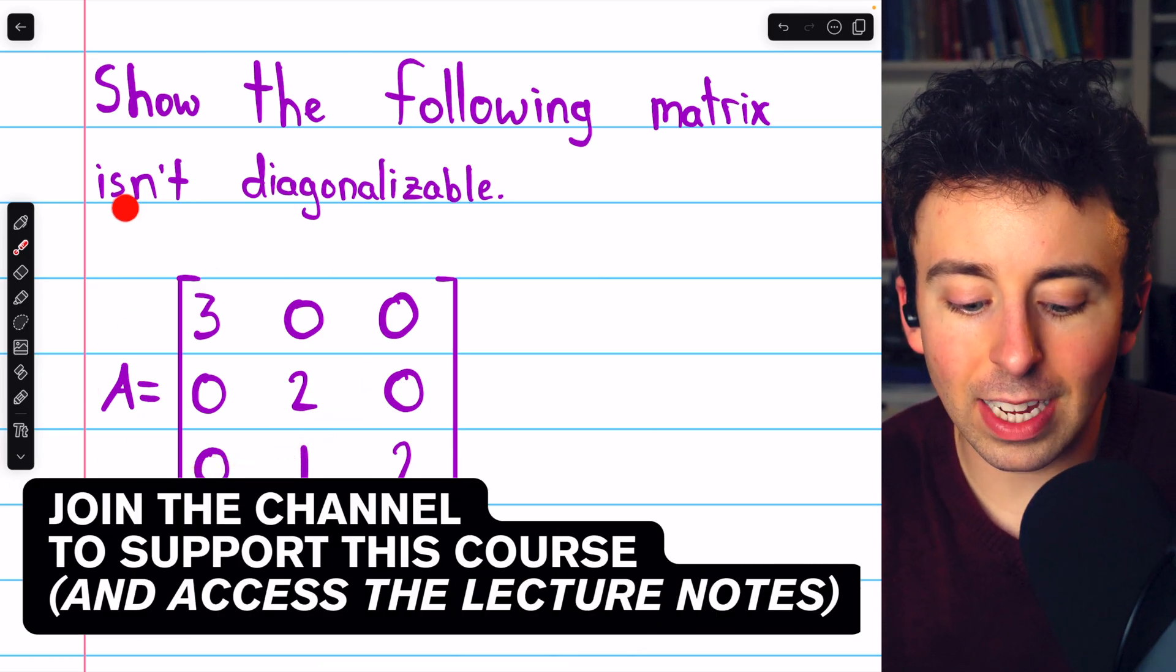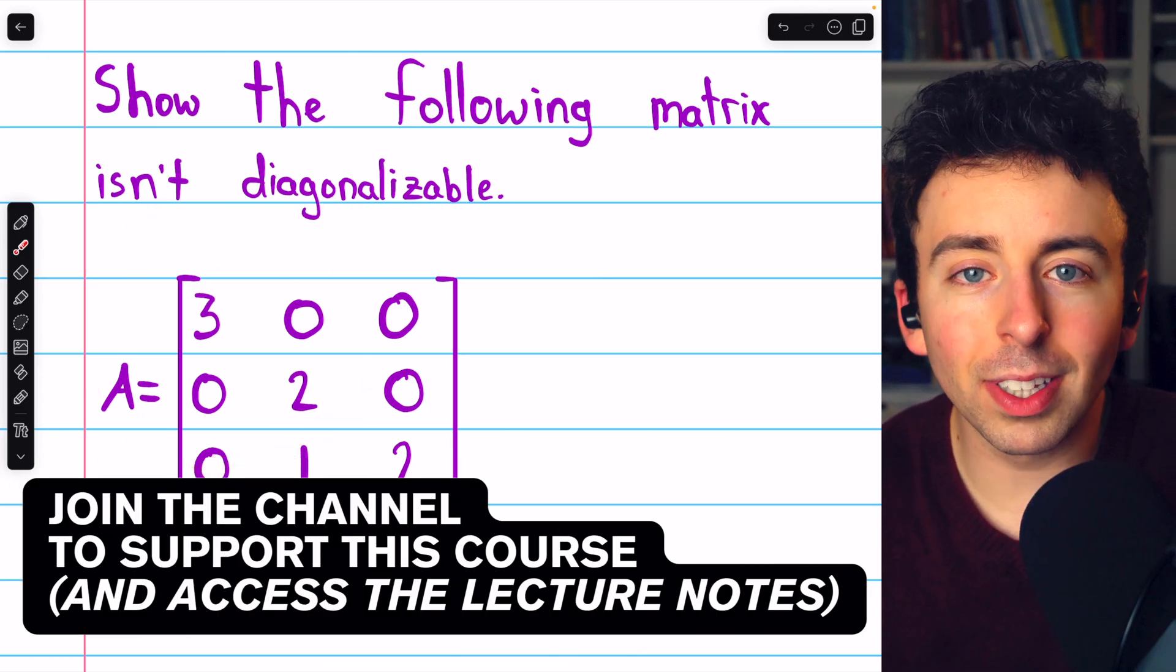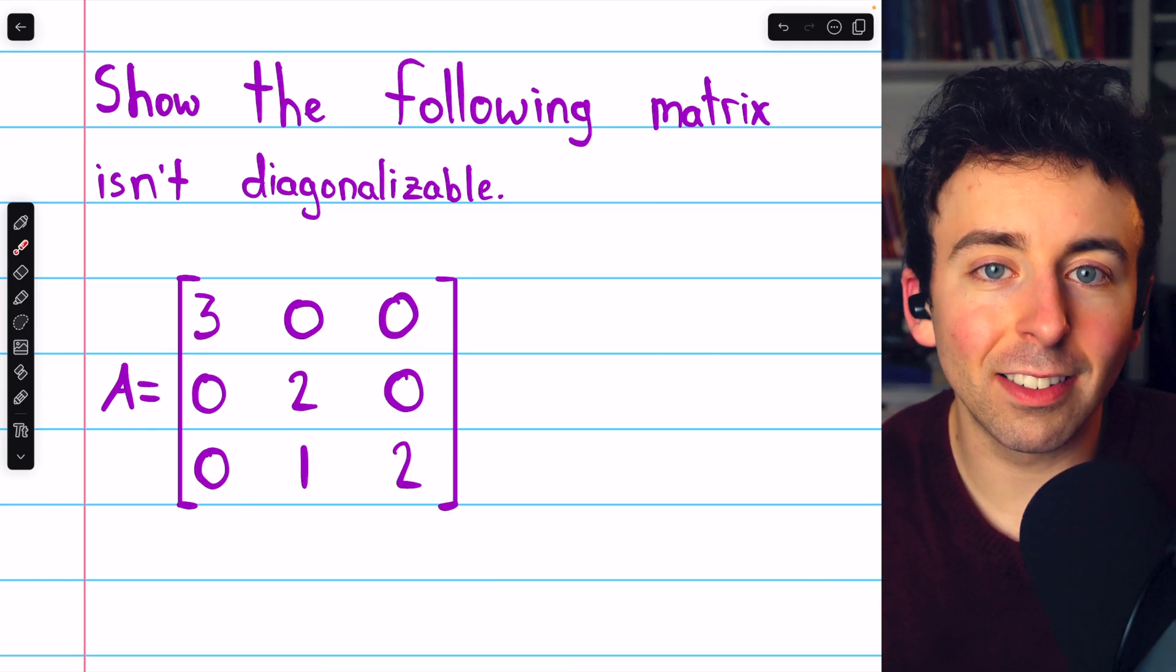We're going to show that this 3x3 matrix isn't diagonalizable. There's a link in the description to my lesson introducing diagonalizability.